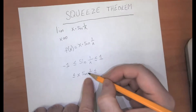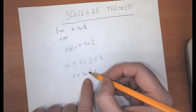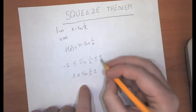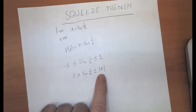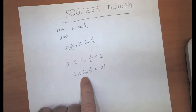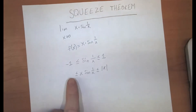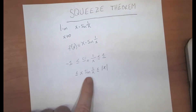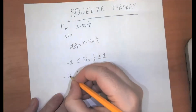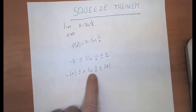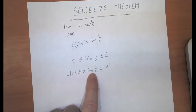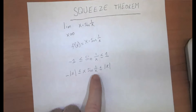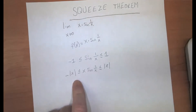If sine of 1 over x has a maximum value of 1 and a minimum value of negative 1, then multiplying it by x, you're going to have a value that's always less than or equal to the absolute value of x. This is always a positive number, whether x is positive or negative, and it's always greater than x times sine of 1 over x. On the other hand, this can't be less than negative the absolute value of x. Whenever we put some number in here, we're multiplying x times a number that's somewhere between negative 1 and positive 1 — so the result must be less than the absolute value of x and greater than the negative of the absolute value of x.